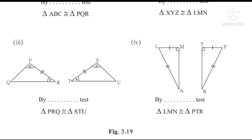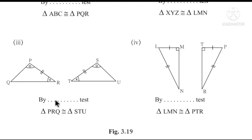Third pair: this is Angle-Side-Angle. The angle, side, and angle are marked congruent. By which test are two triangles congruent? Angle-Side-Angle, ASA. This is the third one.